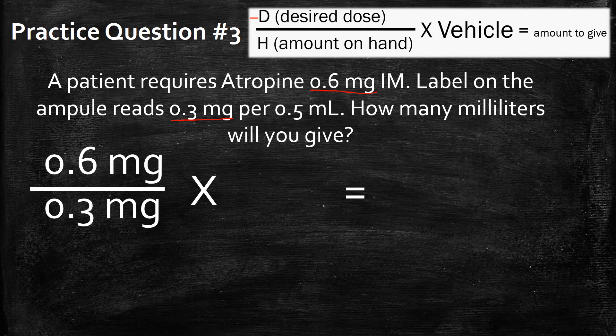And how is this patient getting these 0.3 milligrams? Well, they're obviously getting it IM, but it's going to be with 0.5 milliliters with this injection. So for every 0.5 milliliters, you get 0.3 milligrams. That's just what this ampoule reads.